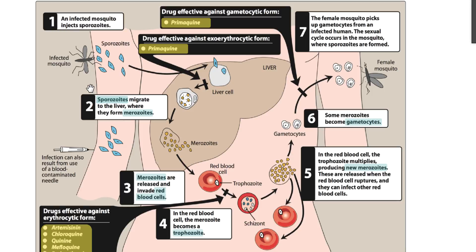First, as we know, the mosquito injects the sporozoite, which then goes to the liver and into the hepatocyte. There it forms a trophozoite, then a schizont, then merozoites. The merozoites destroy the hepatocyte and go into the circulation to invade the red blood cells, forming a trophozoite.